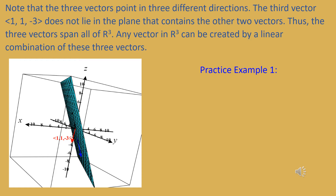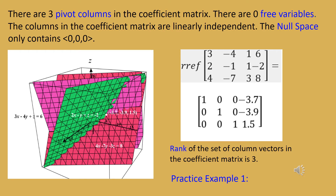That will be true for any system with one unique solution: the coefficient column vectors will span all of Rn. In this example, we found a unique point, interpreted the solution geometrically as intersecting planes and as vectors, and identified the three coefficient columns as linearly independent, spanning all of R3 with rank 3. The RREF augmented matrix has three pivot columns, zero free variables, and the null space contains only the zero vector — whenever there's a unique solution, the null space always contains only the zero vector.